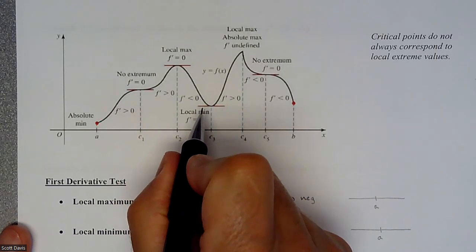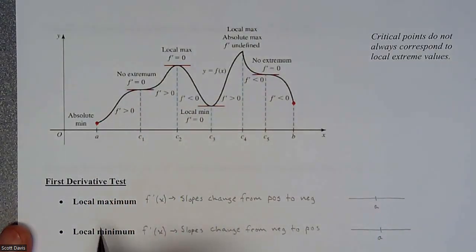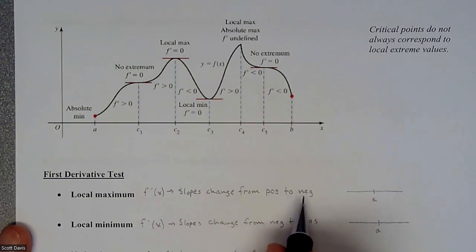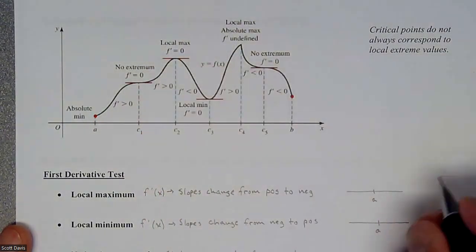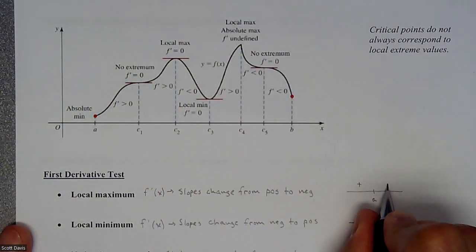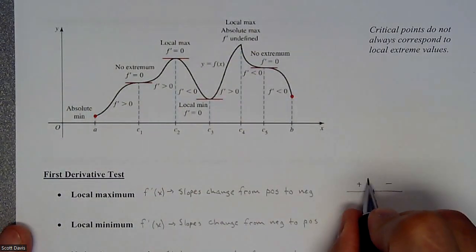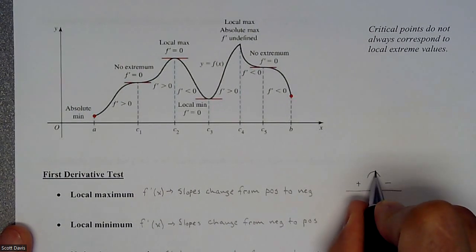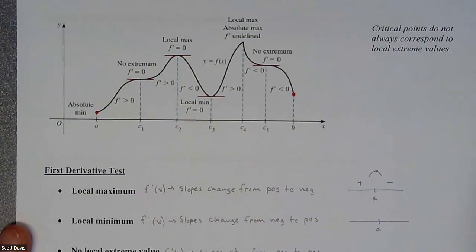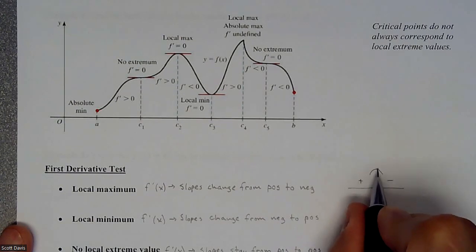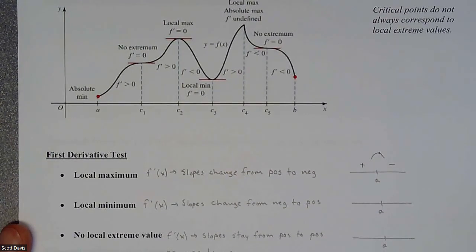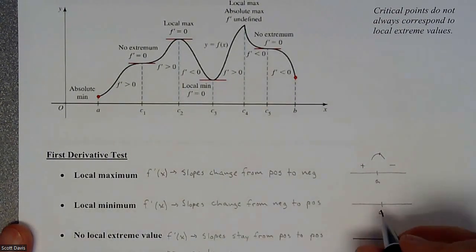So how are we going to differentiate between these three? We're going to have a local maximum if your slopes change from positive to negative. You have a positive slope on this side and a negative slope on this side. So a positive slope transitioning to a negative slope means we have that kind of a look with a slope of zero somewhere in between — positive slopes on the left, negative slopes on the right means we have a maximum.